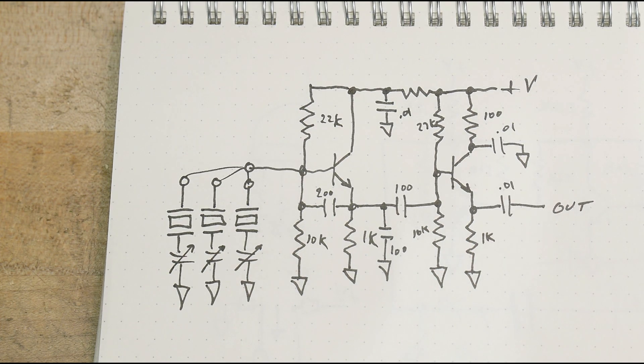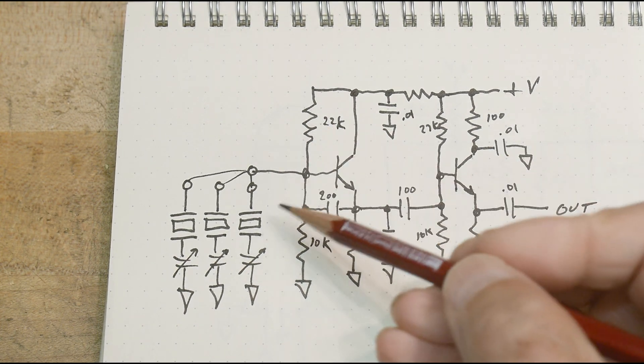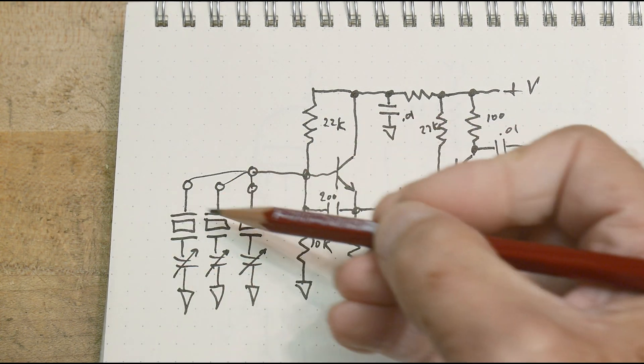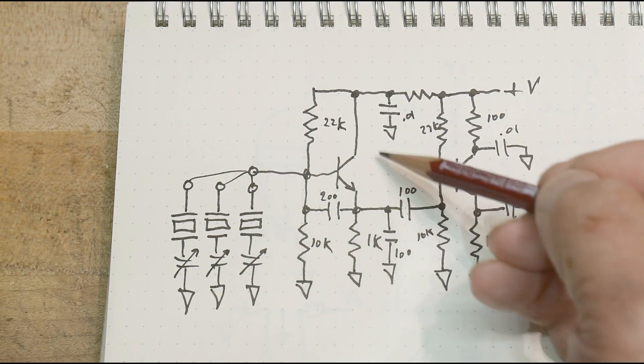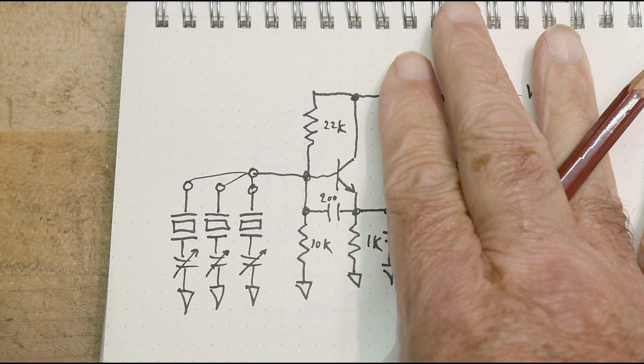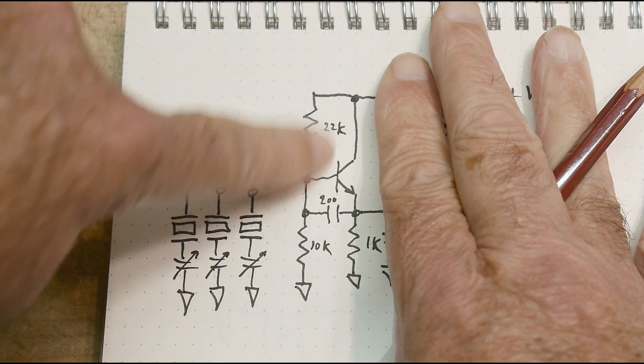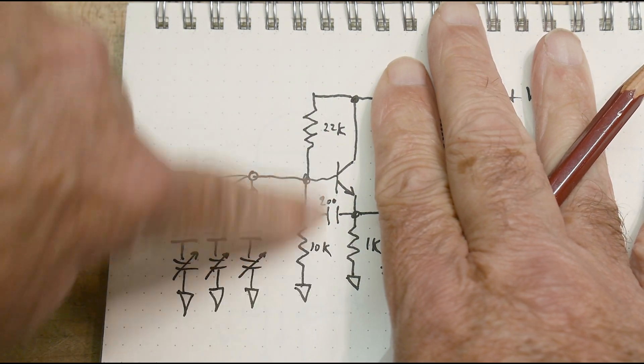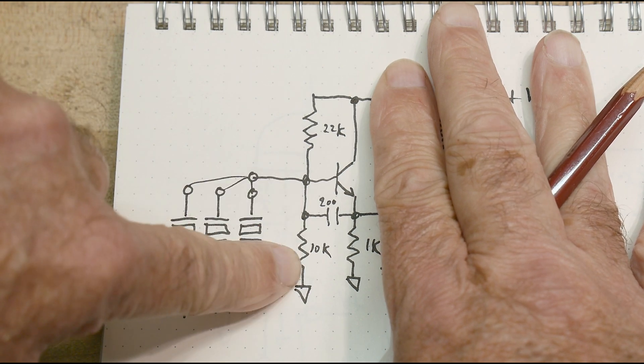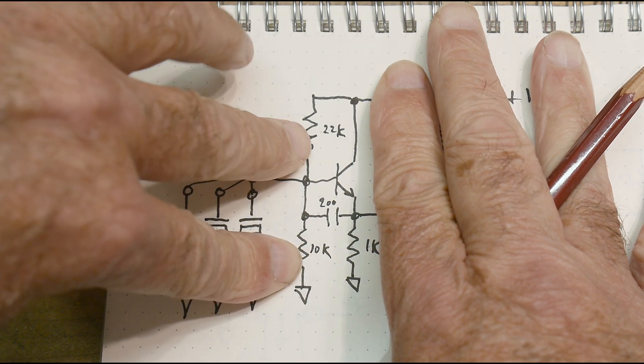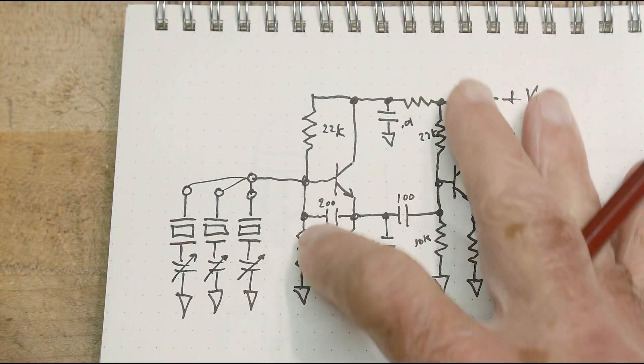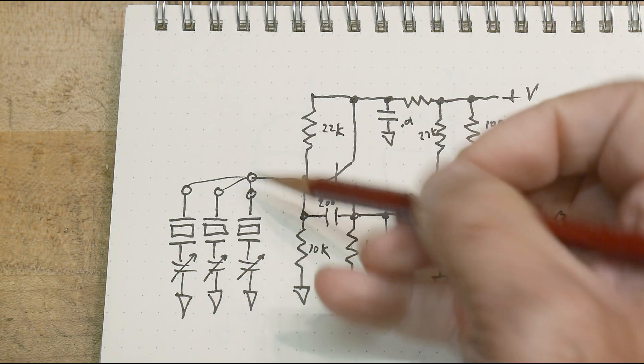Okay, I've redrawn the schematic that I found. So there's a whole bunch of crystals, there's 10 crystals plus the one I added, 11 crystals, and they go into a very simple oscillator. There's a transistor that's basically biased in the middle, 22k and 10k, and then it has a positive feedback capacitor.